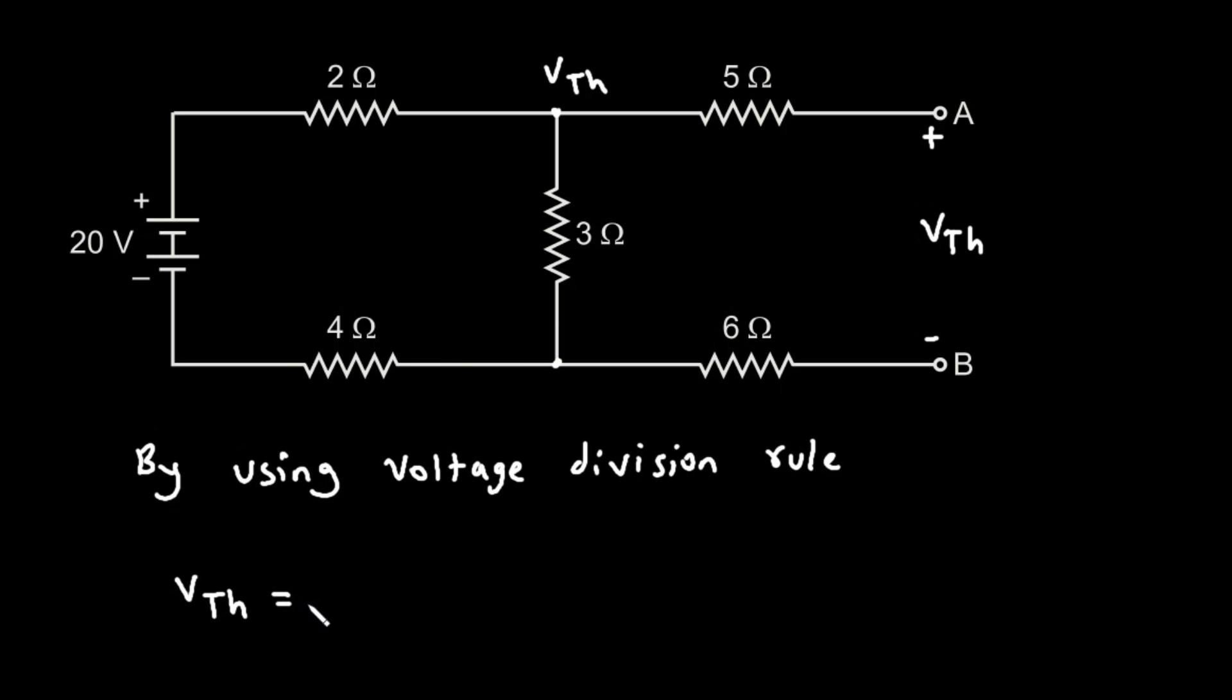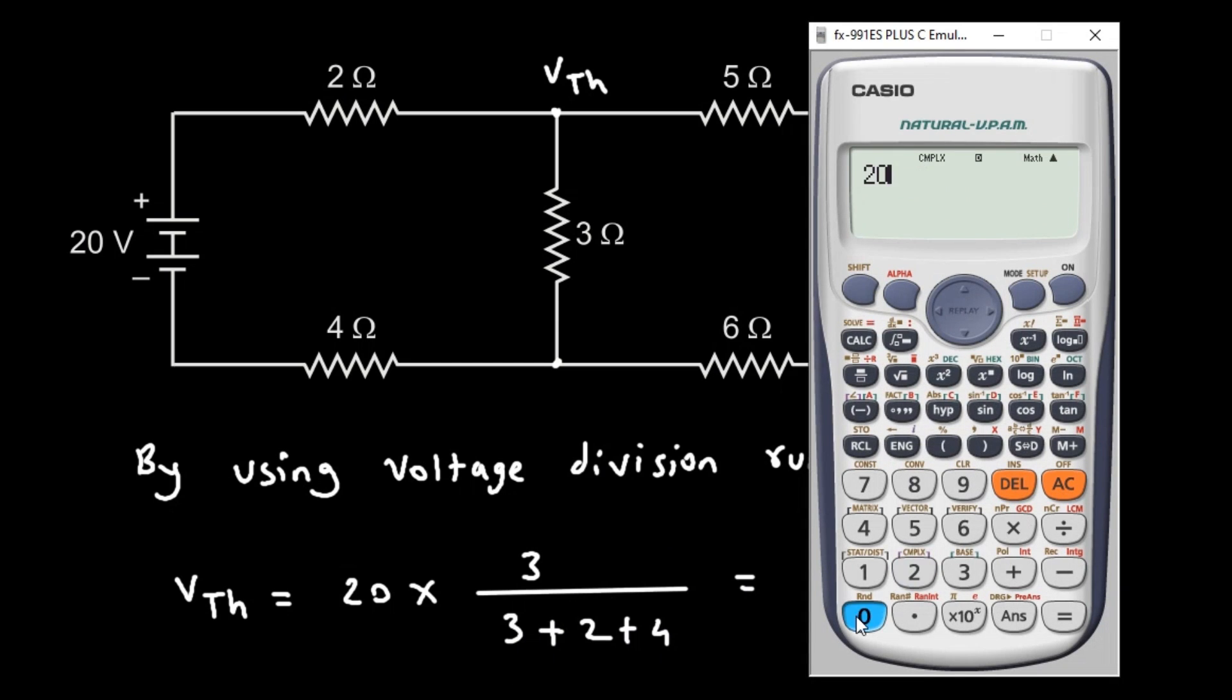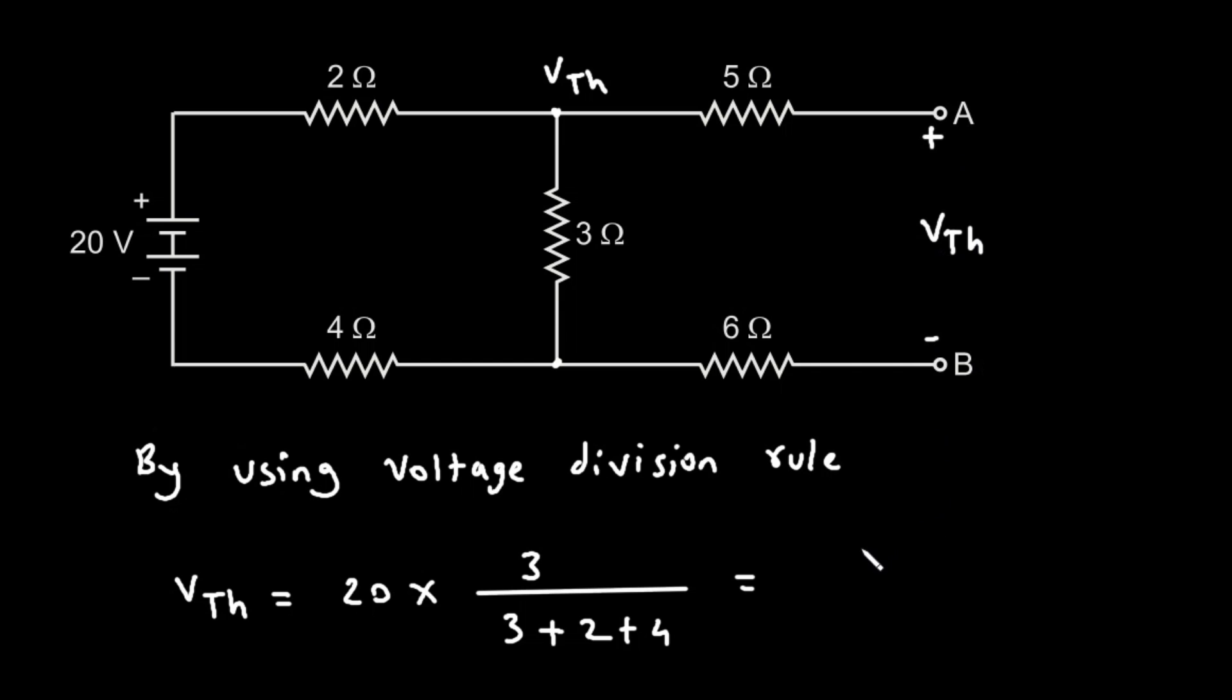So VTH is equal to this voltage which is 20 multiplied with 3 divided by 3 plus 2 plus 4. Now if we calculate this in calculator, it will be 20 multiplied with 3 divided by 3 plus 2 plus 4, and it is 20 divided by 3 volt.